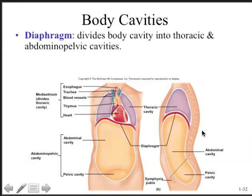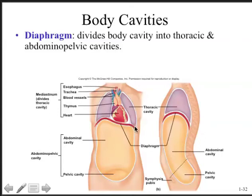The thoracic and abdominal pelvic cavities are divided by the diaphragm, the main muscle of breathing. The diaphragm sits at the base of the lungs and ventilates them through its contraction, producing a vacuum that draws air in. When it relaxes back to its domed shape, it produces positive pressure around the lungs that forces air out. This is the major dividing line splitting the body cavity into thoracic and abdominal pelvic regions.